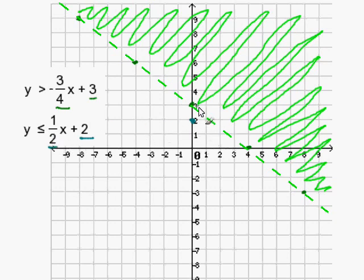One over two is you go up one over two. And you keep on going, and you can go backwards as well. So the more points you put, the more accurate your line would be.